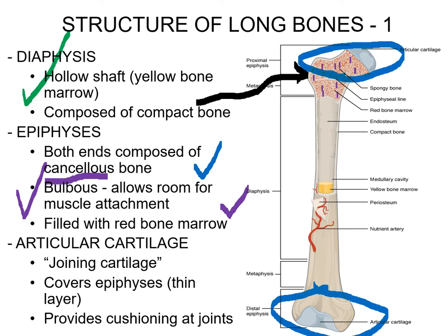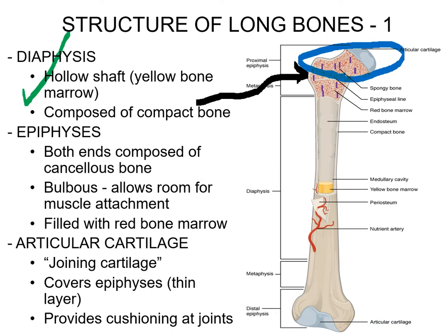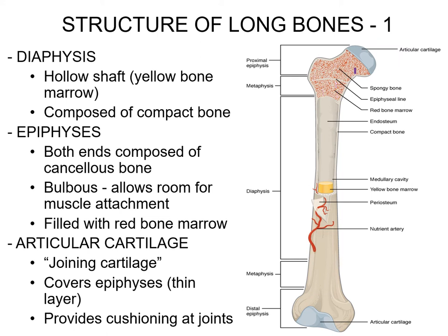Moving on to articular cartilage. Anytime you see the word articular or articulation, that's referring to a joint. We're going to have cartilage protecting the very edges of these bones — the epiphysis. You have cartilage on both ends of the epiphysis protecting this area. What kind of cartilage is it? Elastic, fibrocartilage, or hyaline? As we talked about in chapter four, when in doubt go with hyaline — by far the most popular, most abundant cartilage in the body. You would be correct — it's hyaline cartilage. It provides that smooth glass layer of protection, cushioning those joints to make sure we're not rubbing bone on bone and having awful, painful arthritis.